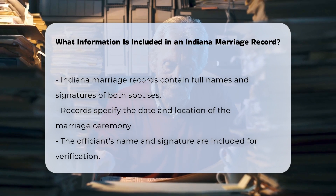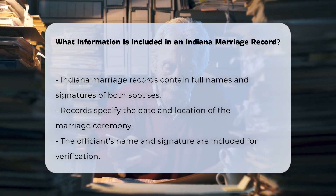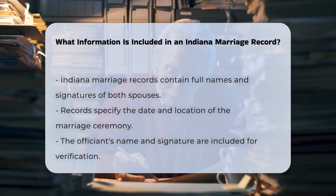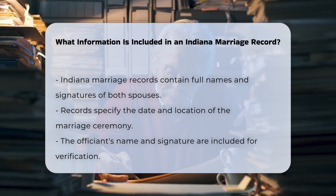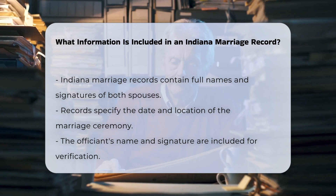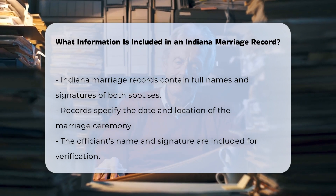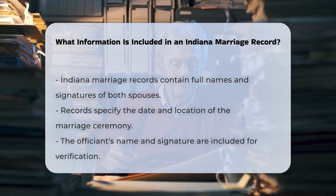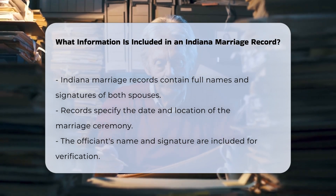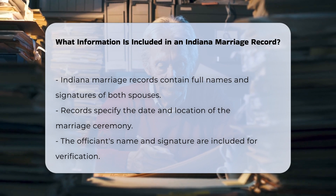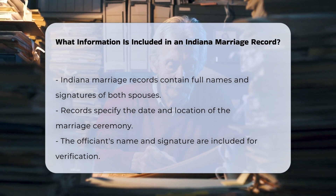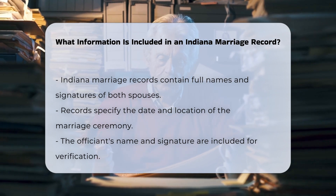Full names and signatures. An Indiana marriage record will include the full names of both spouses along with their signatures. This is a crucial piece of information for identifying the individuals involved in the marriage.